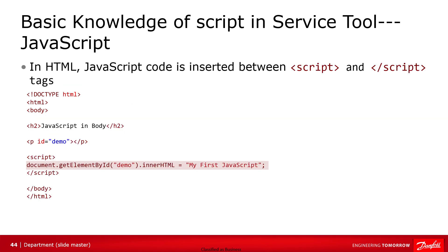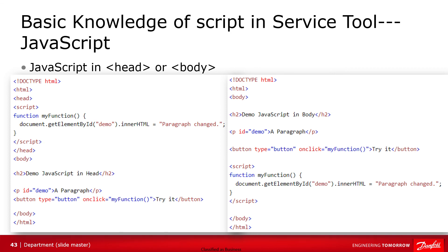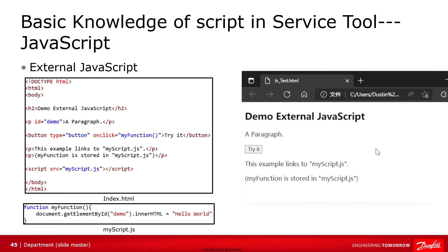In HTML, JavaScript code is inserted between script and /script tags. You can place any number of scripts in an HTML document. Scripts can be placed in the body, or in the head section, or in both. JavaScript can also be placed in external files. External scripts are practical when the same code is used in many different webpages. JavaScript files have the extension .js. To use an external script, put the name of the script file in the source attribute of a script tag. In this example, we define a function in an external script file and place a reference in the HTML body section. External scripts cannot contain a script tag.